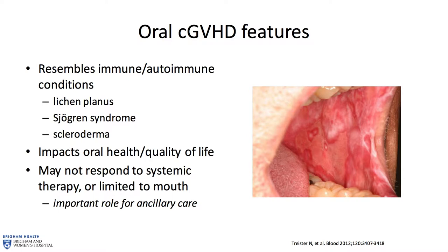What we see with chronic graft-versus-host disease really resembles conditions that we otherwise see in the general population in patients who have not undergone a transplant. The rash-like changes essentially resemble almost exactly a condition that we see routinely in oral medicine called oral lichen planus. The clinical features are essentially exactly the same, with maybe some tiny nuanced differences.